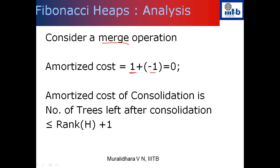The number of trees left at the end of consolidation can only be order rank of h plus 1. Why? Because after consolidation, for every rank there can be at most one tree - if two trees of the same rank exist, I merge them. Any tree in the collection has rank between 0 and rank of h, and for each specific rank there can be only one tree. So the number of possible trees is only rank of h plus 1. Therefore, the amortized cost of the consolidation operation is at most rank of h plus 1, which is order rank of h.